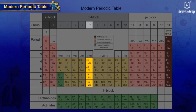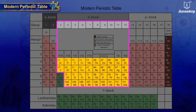Elements placed in the groups 3 to 12 in the middle of the periodic table are known as transition elements.